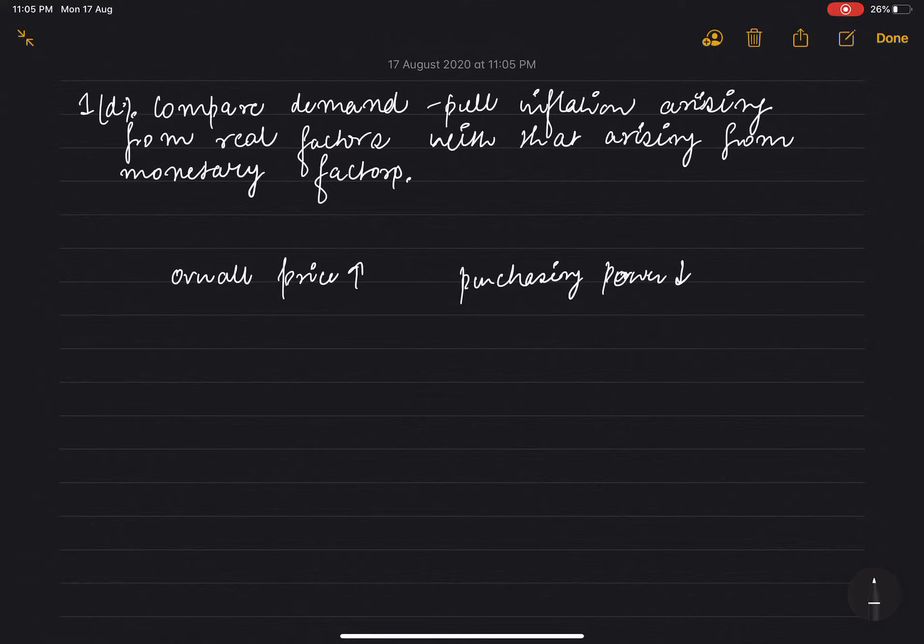It can be measured by CPI. Demand pull inflation occurs when our aggregate demand is greater than aggregate supply. When AD is greater than AS, that is demand pull inflation. When our aggregate demand is greater than aggregate supply in the economy.